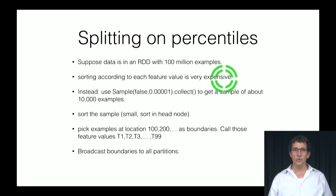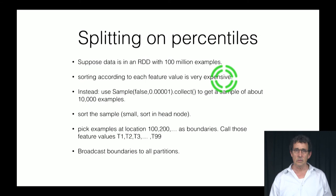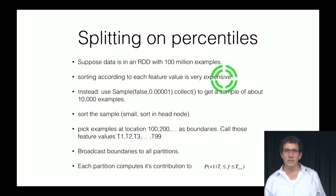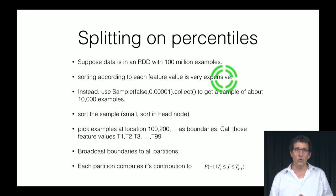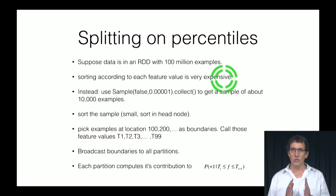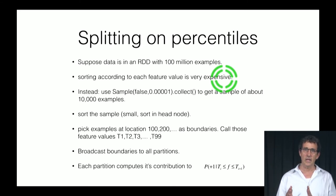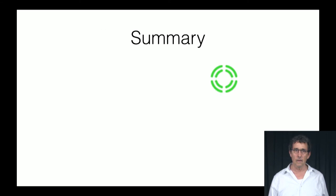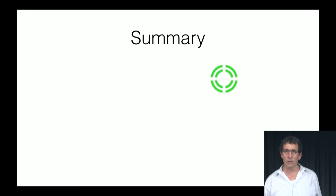These boundaries are then broadcast to all of the partitions, so all partitions know how to split the data. Each partition computes the contribution of the data it holds to the error of a rule that predicts between one threshold and the next. We then combine all of this data and get the criteria that gives us the best rule overall.